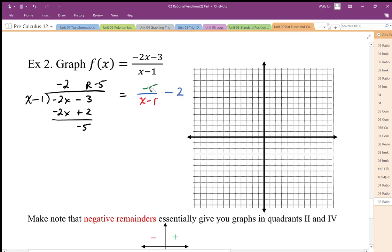So negative 2 plus the remainder over divisor, and that represents my equivalent expression to the one above. So this is an equivalent expression for f of x. And with this expression I can see I have a horizontal shift of plus 1. So that's going to give me my vertical asymptote at x equals 1.